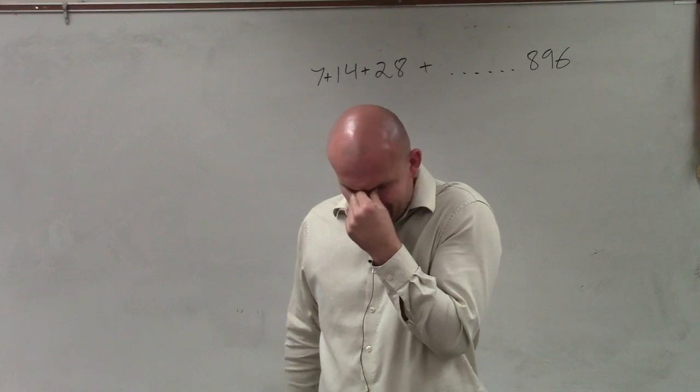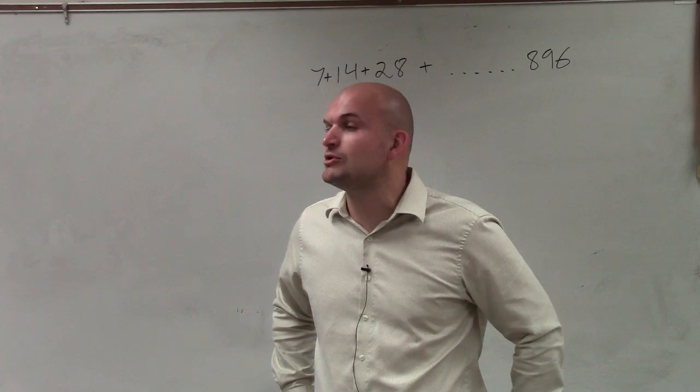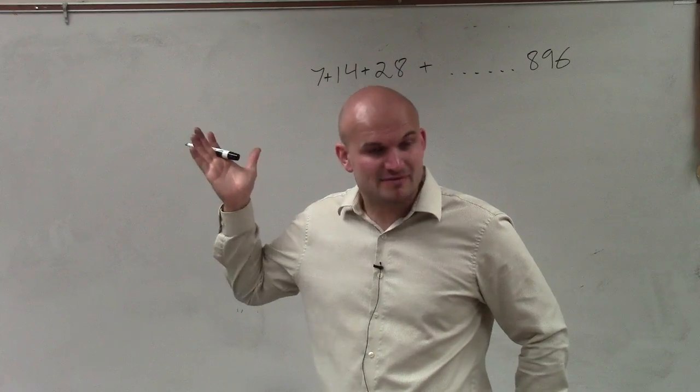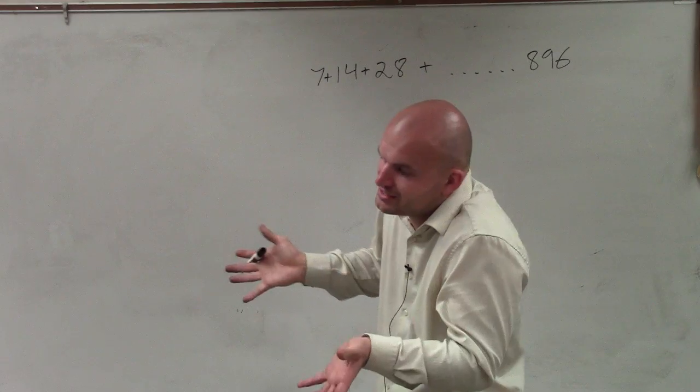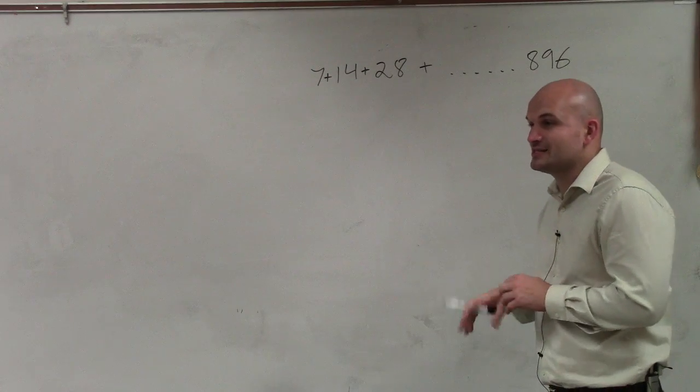what they're asking us to do is to write the rule in, or write the sum notation for this. So we have a sequence, and that's a sum, obviously. We don't have a value of the sum, but it's one of the sums that you had added in. So what they want to do is just write this in the rule.